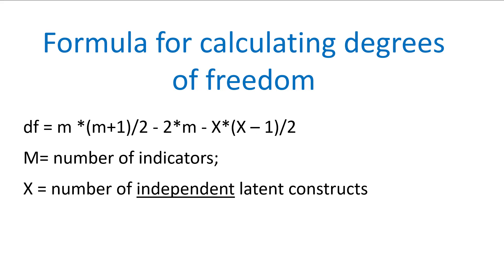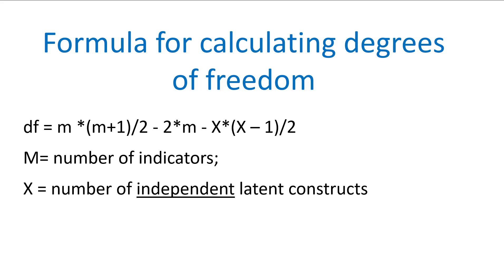Let's look at the pieces of the formula. First, what do those m's and x's represent? The m's in this formula represent indicators or observables in your model, and the x represents the number of independent latent constructs. You need to focus on that keyword: the independent latent constructs, not all of them, just the independent ones.